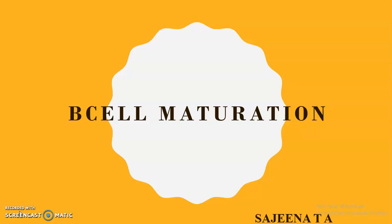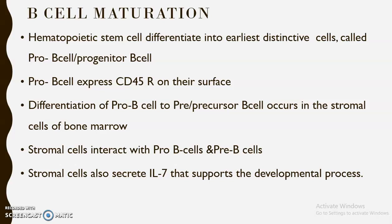Hi friends, I'm Sajina. Today we can see B cell maturation. All blood cells originate from a common hematopoietic stem cell by a process called hematopoiesis, which occurs in bone marrow. This hematopoietic stem cell can also differentiate into B cells, and the differentiation of B cells includes many steps: formation of pro B cell, pre B cell, immature B cell, and mature B cell.